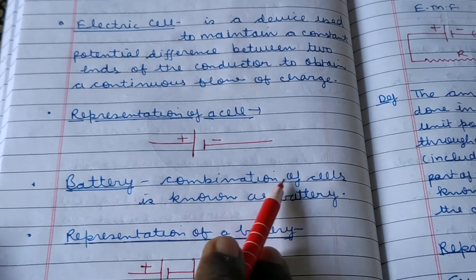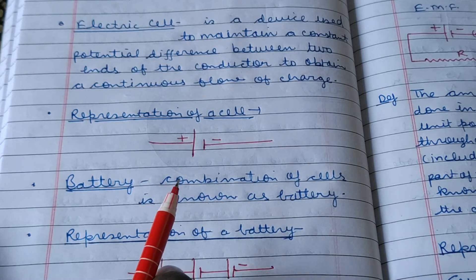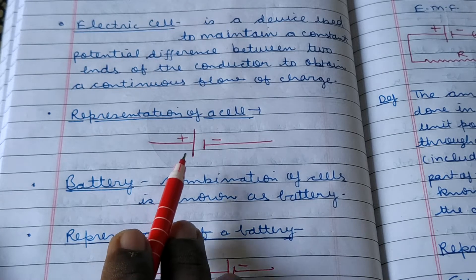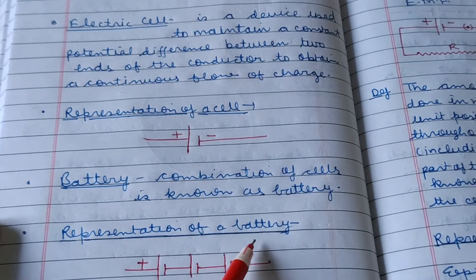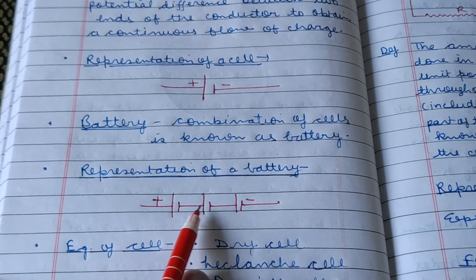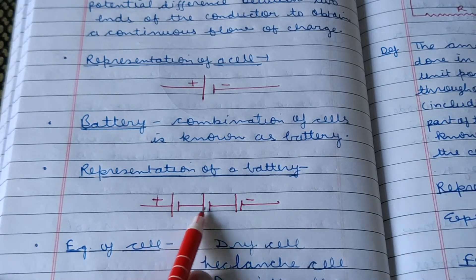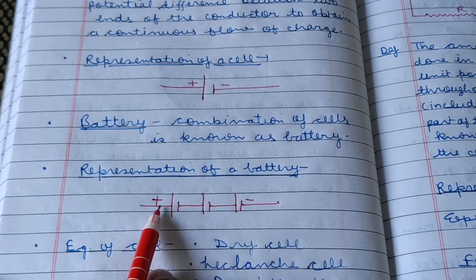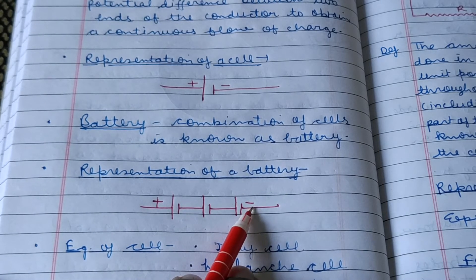Battery: the combination of cells is known as a battery. If you have to draw more amount of current, you cannot extract it from a single cell. Then we use a combination of cells, which is known as a battery. You can use two, three, or more cells in one line. The initial terminal will be positively charged and the last terminal will be negatively charged.